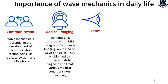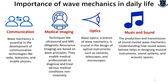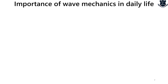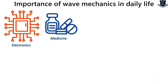Wave optics is a branch of wave mechanics crucial for optical instruments, creating cameras and microscopes. Another important area is music and sound — acoustics and how sound waves behave help in designing instruments, sound systems, and the symphonies and operas we listen to. Electronics: wave mechanics is used to design and develop semiconductor devices such as transistors and lasers. Wave mechanics is also used in medical imaging techniques such as MRI and ultrasound.